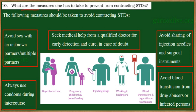What are the measures one has to take to prevent from contracting STD? STD stands for sexually transmitted diseases. The question is what measures can be taken so that these diseases cannot be spread from an infected individual to a healthy individual? Before we understand that, let us quickly know some examples of STD and how are they transferred.